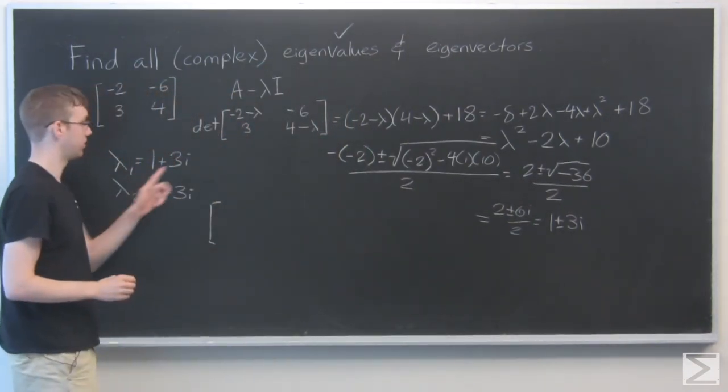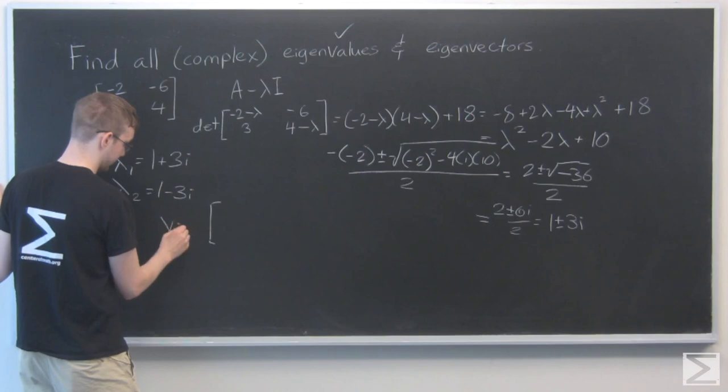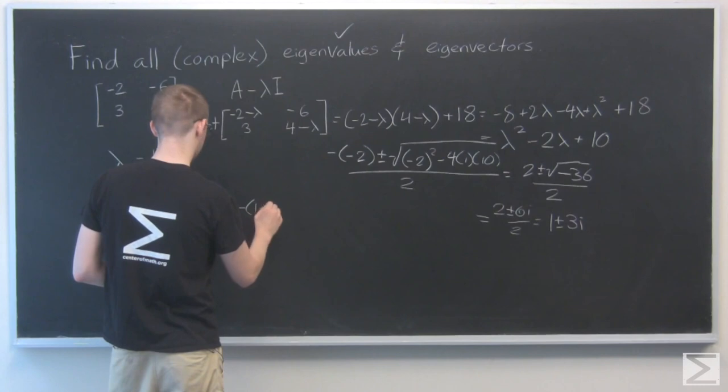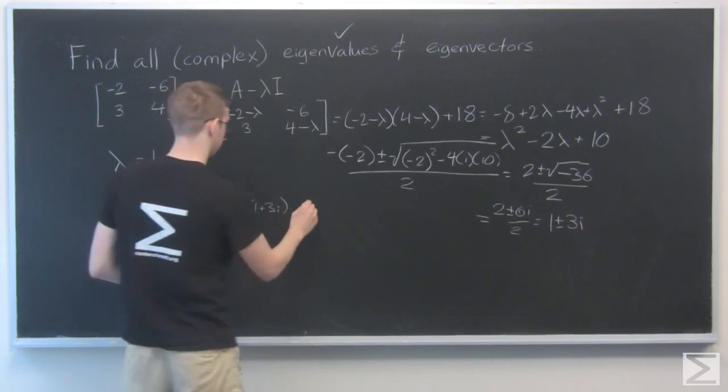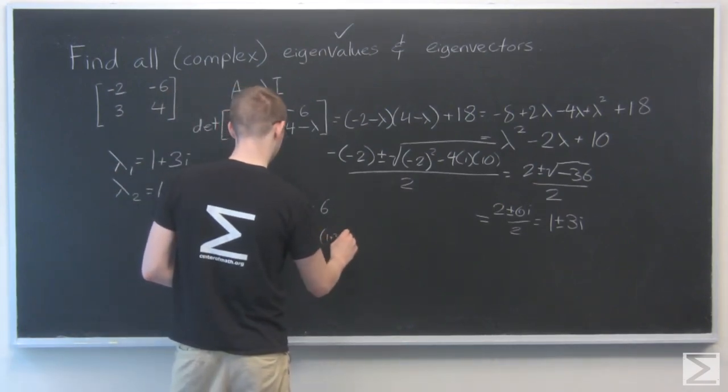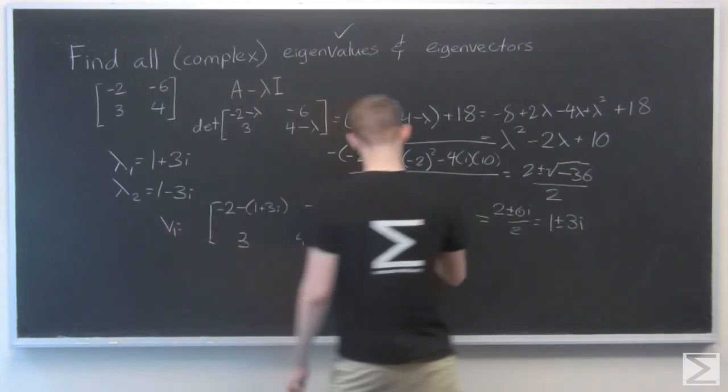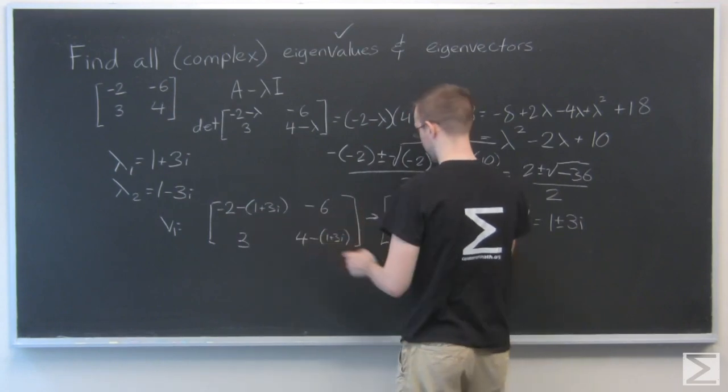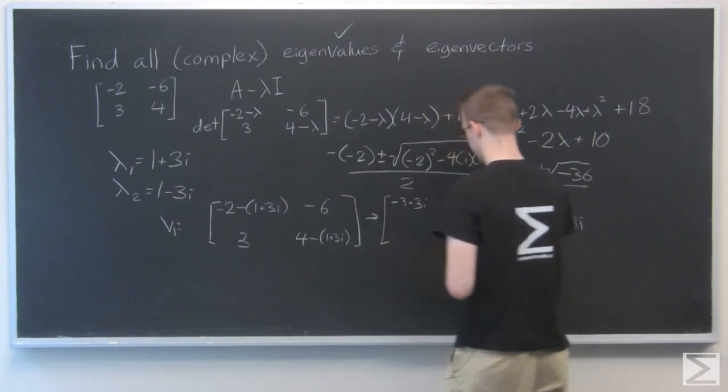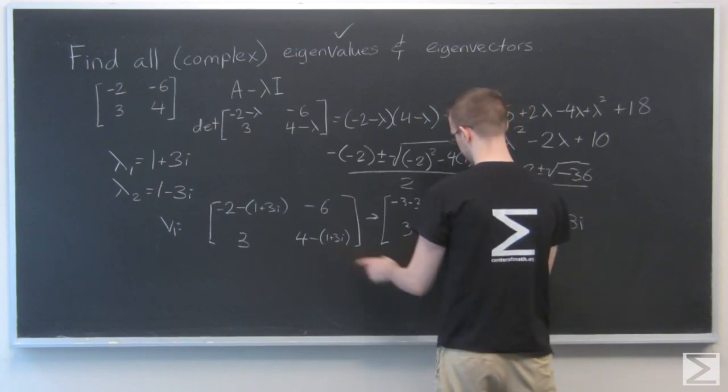So I'll put lambda 1 in for that lambda. Now we're finding v1 here. So, minus 2 minus 1 plus 3i, and 4 minus 1 plus 3i. Minus 2 minus 1 is minus 3, and distribute that negative. Just be careful with our numbers. I'm not always careful. 4 minus 1 is 3, and that becomes negative 3i.